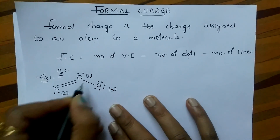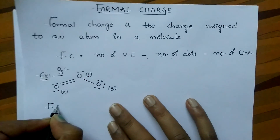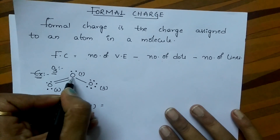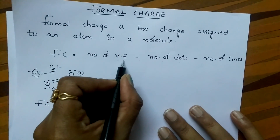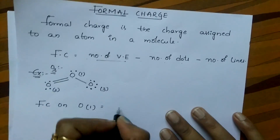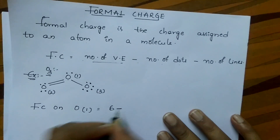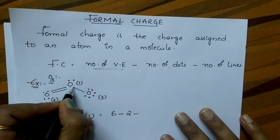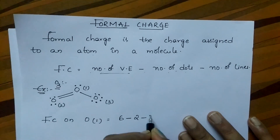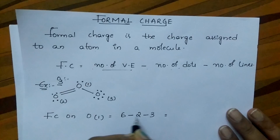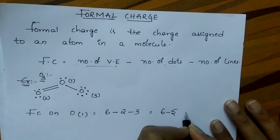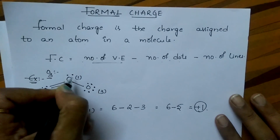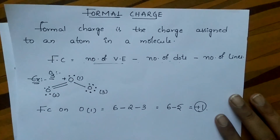Let us find the formal charge on first oxygen. Oxygen belongs to the sixth group, so the number of valency electrons on first oxygen is 6, minus number of dots: 1, 2, minus number of lines: 1, 2, 3. So 6 minus 2 minus 3 equals 6 minus 5, which is equal to plus 1. The formal charge on this oxygen is plus 1.